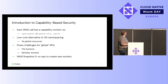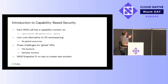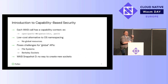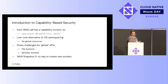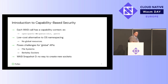Each WASI call has a capability context. You can look at two calls: open and openat. WASI has no open call, because open is global — it operates on a global context — where openat operates on a directory context. So you can say, within this directory, open a path. This goes all the way back to the 1960s, when we first got memory controllers in hardware and invented the concept of processes, where a process can have a separate address space.